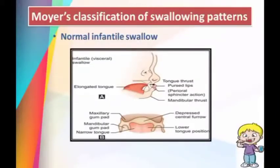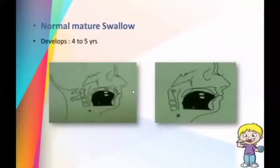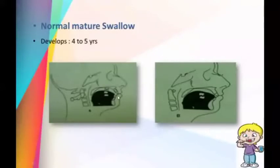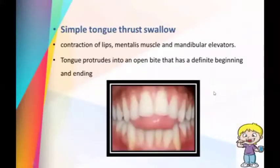Moyer's classification of swallowing patterns divides swallowing into different types. In infantile swallow, the tongue lies between the gum pads and the mandible is stabilized by contraction of facial muscles such as the buccinator. In the normal mature swallow, which develops at around 4 to 5 years, the tongue tip rests behind the mandibular incisors during rest, with very little lip or cheek activity. During the normal mature swallow, the tongue tip contacts the palatal surface of the maxillary incisors. In the simple tongue thrust swallow, there is marked contraction of the lips, mentalis muscle, and mandibular elevators, and the tongue protrudes into the open bite with a definite beginning and end.